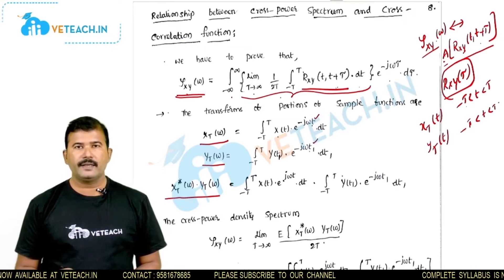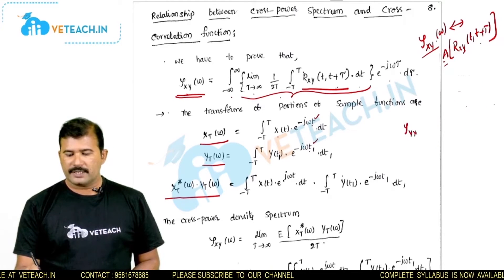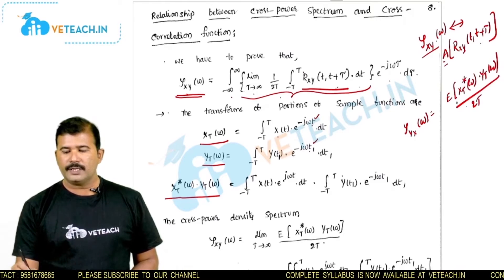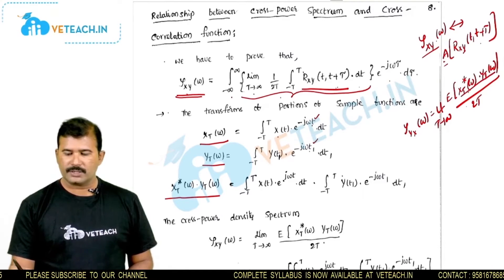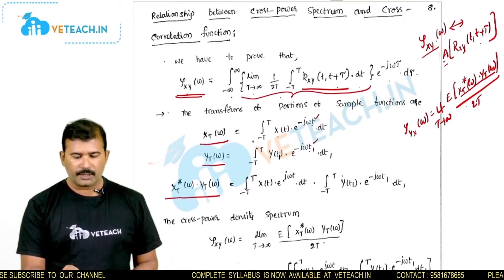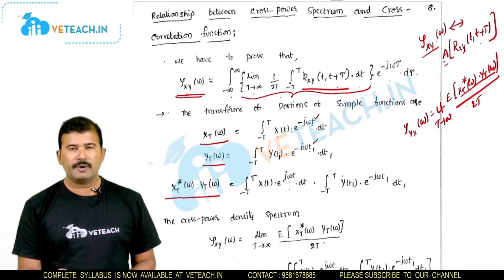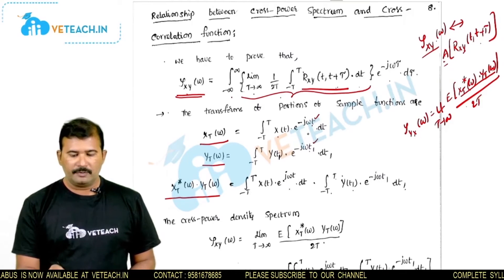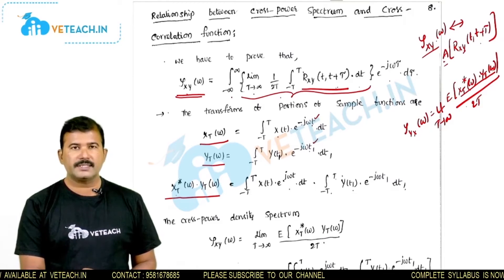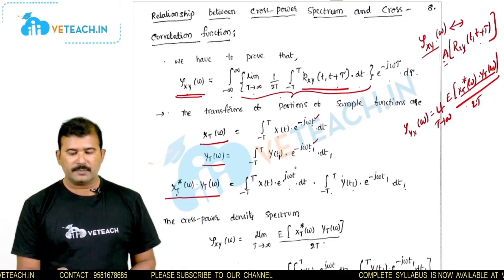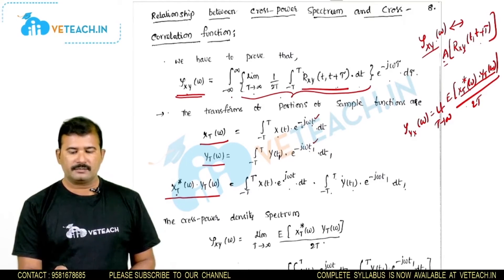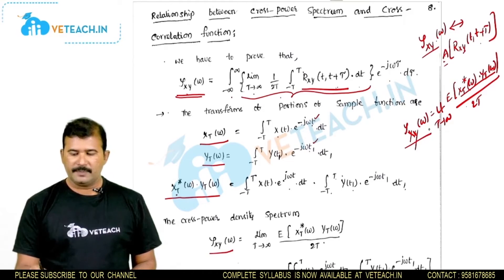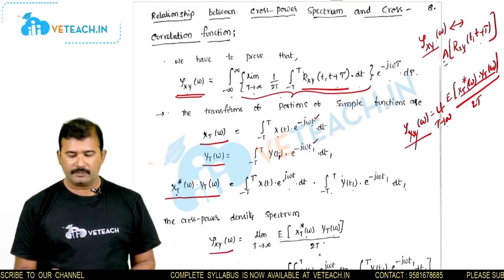Now, the cross power density spectrum ψ_xy(ω) is defined as the limit as T tends to infinity of the expected value of X_T*(ω) · Y_T(ω) divided by 2T. We compute the product X_T*(ω) · Y_T(ω) as: integral from minus T to T of x(t) e^(+jωt) dt, times integral from minus T to T of y(t₁) e^(−jωt₁) dt₁. The plus sign in the exponent arises because it is the conjugate X_T*(ω).